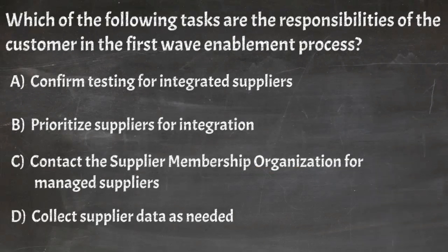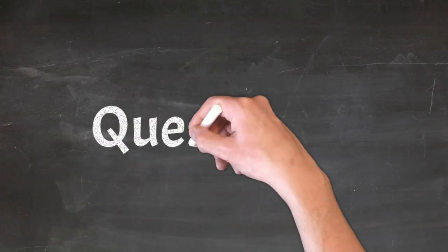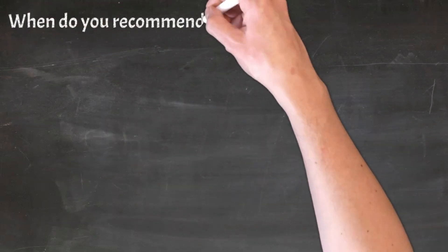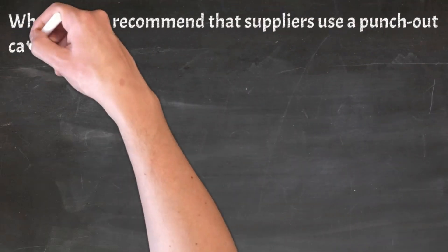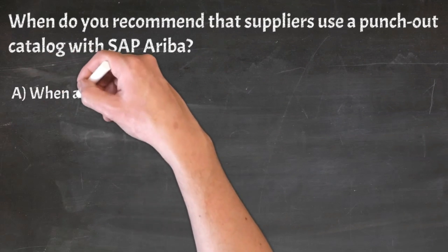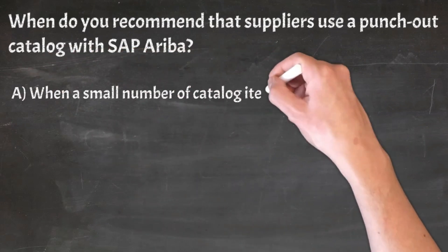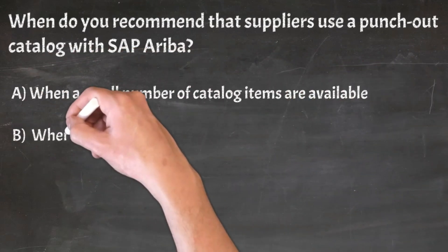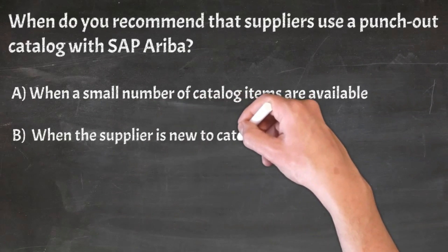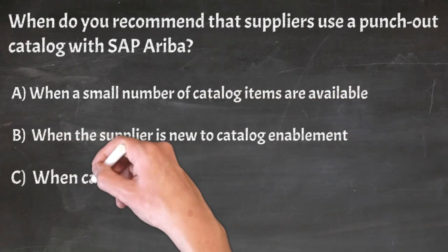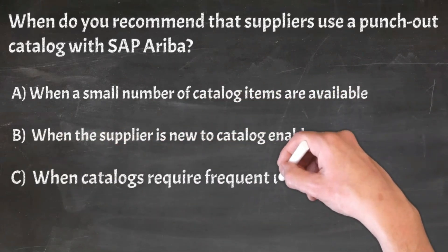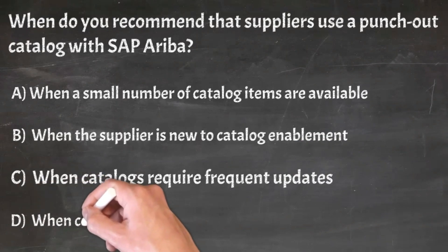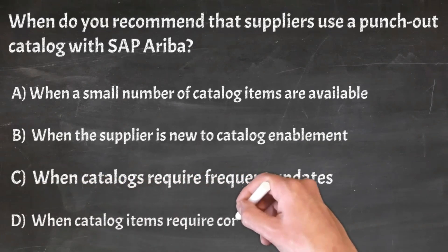Correct answer: A. Confirm testing for integrated suppliers. Question 6: When do you recommend that suppliers use a punch-out catalog with SAP Ariba? A. When a small number of catalog items are available, B. When the supplier is new to catalog enablement, C. When catalogs require frequent updates, D. When catalog items require configuration.